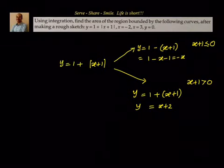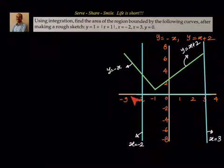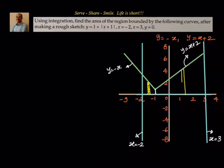Now let us understand how the rough sketch will look. When we draw the rough sketch, we see that y equals minus x and y equals x plus 2 both coincide at the point minus 1 comma 1. We have to find the area enclosed between x equals minus 2, x equals 3, and y equals 0, which is this whole area. We will divide this into two parts, A1 and A2, using a vertical line, and find each part using vertical strips. So we have to find A1 plus A2.